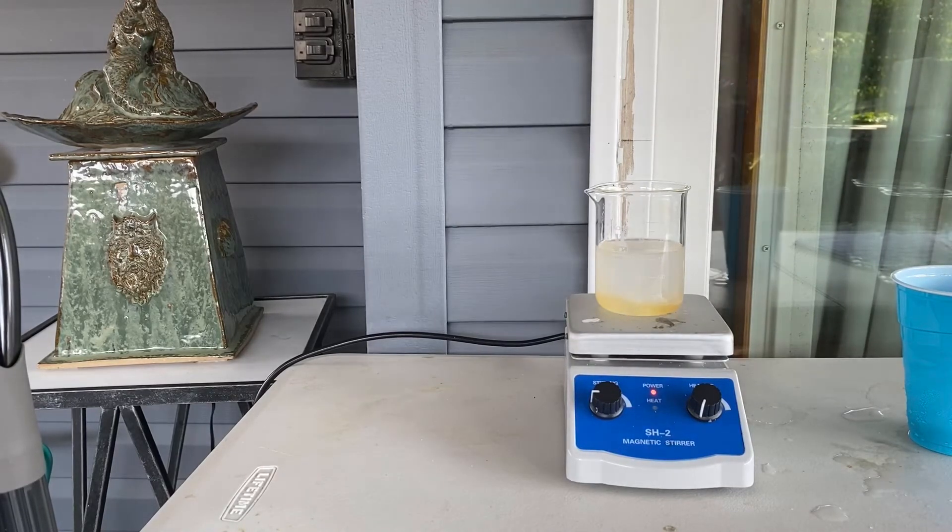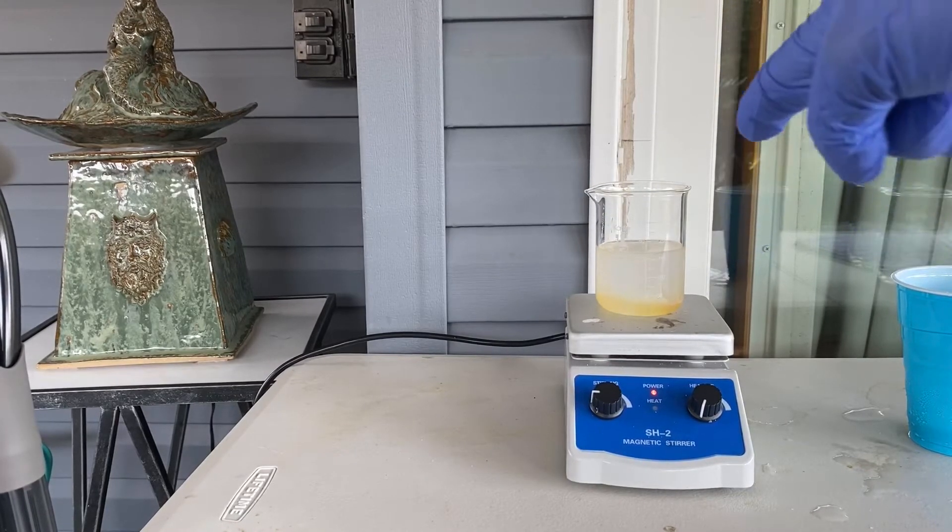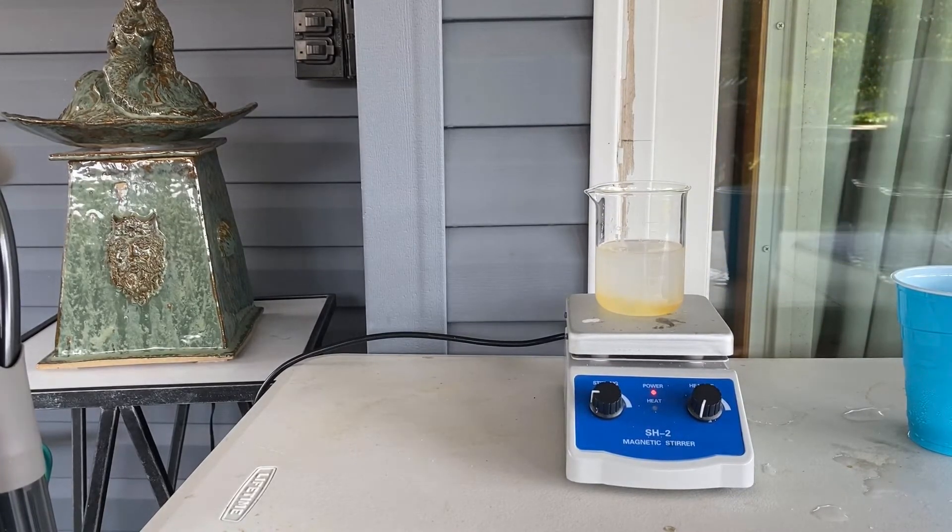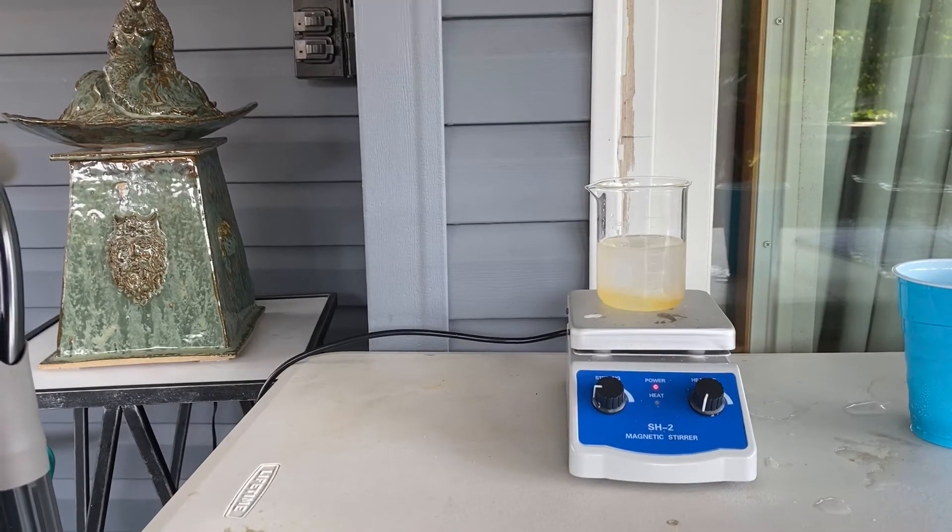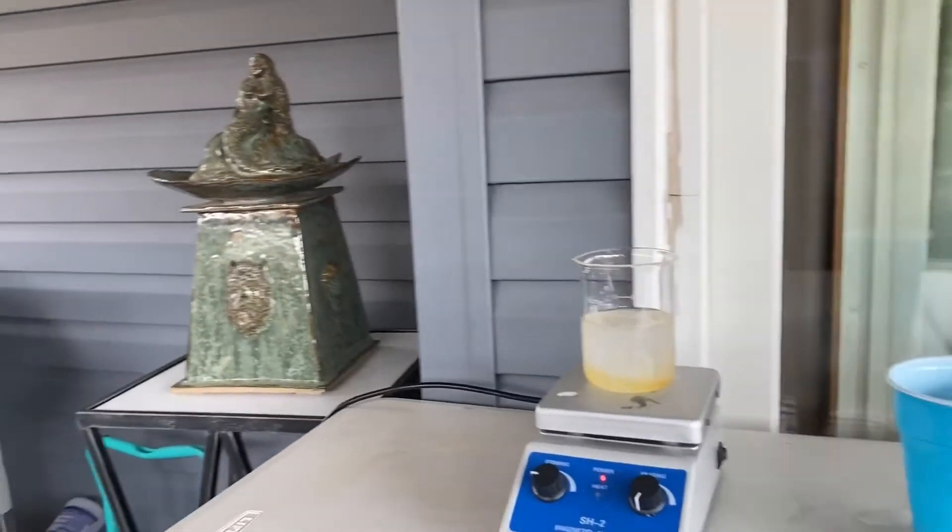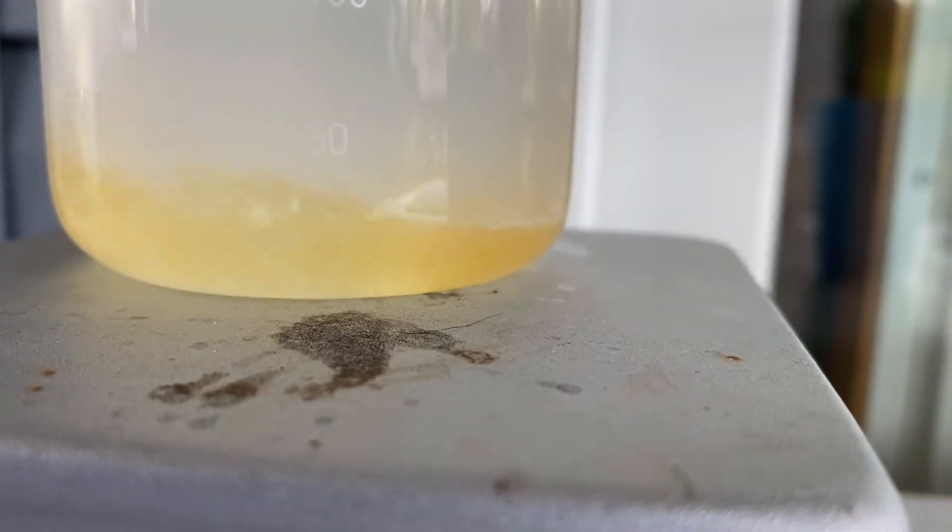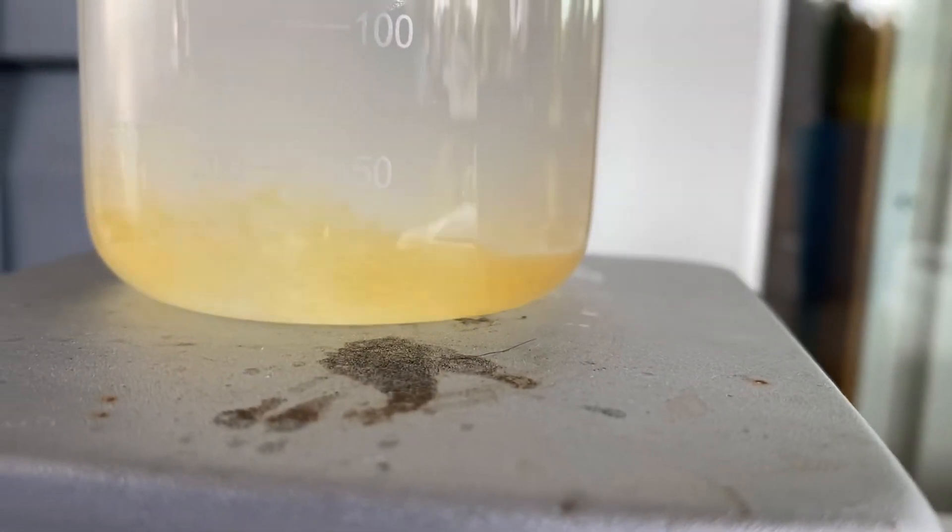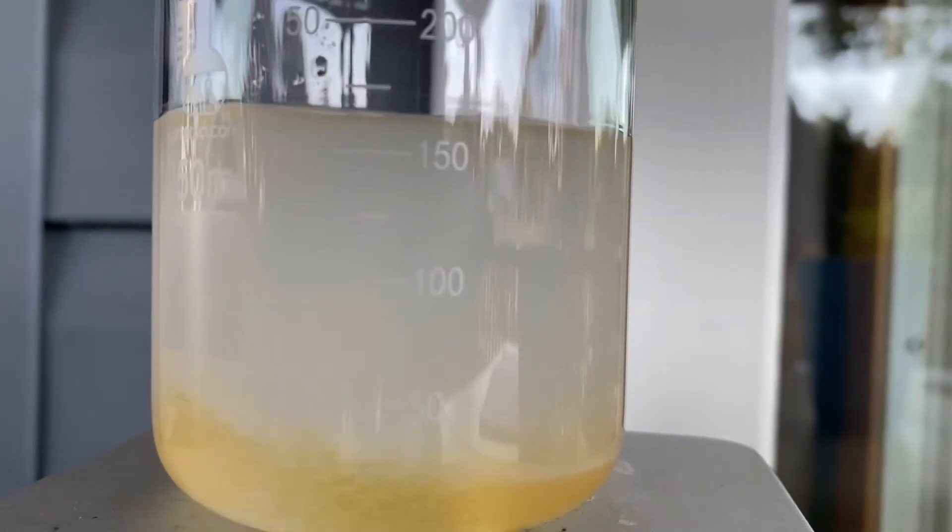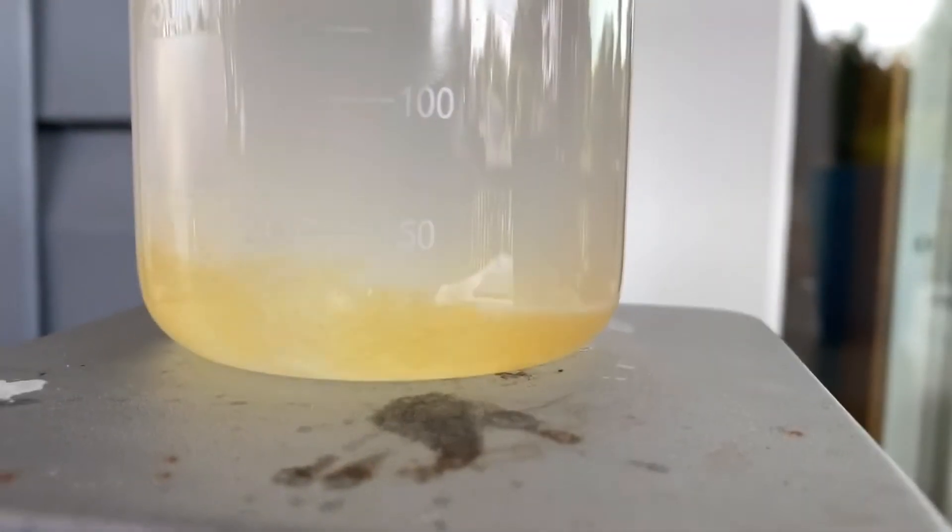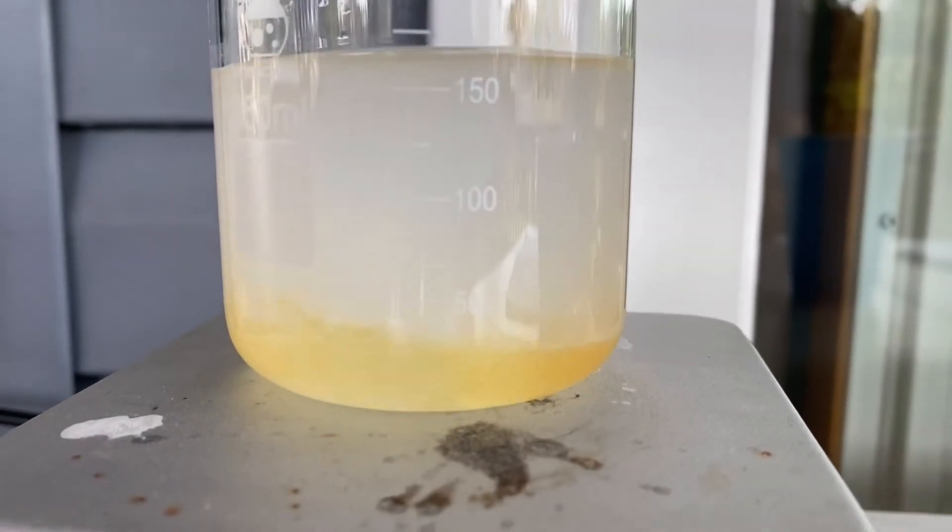So now we're going to let this stir for about 10 minutes, and then we will come back and decant the upper toluene layer. Before we go, I figured I'll just show you. As you can see, there is the sulfuric acid. As you can see, it is currently reacting with the methylthiophene and pulling it out of the toluene, which is that cloudy upper layer. So yeah, that's what's happening right now. So give it 10 minutes, and I'll be back.